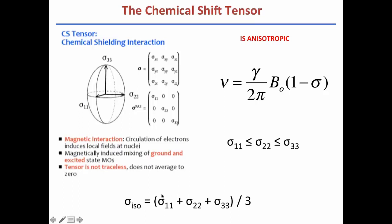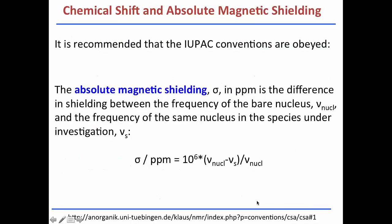But this shielding constant in solution is a number. And this number is what we normally know as the isotropic shielding constant. And this isotropic shielding constant is just the average of the three values of the chemical shift tensor. So sigma 11 plus sigma 22 plus sigma 33 divided by 3.